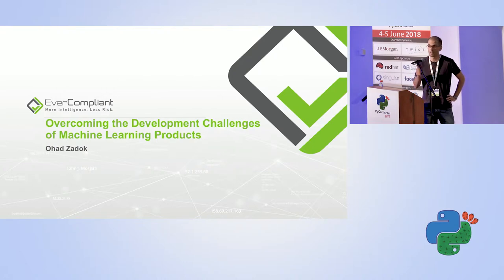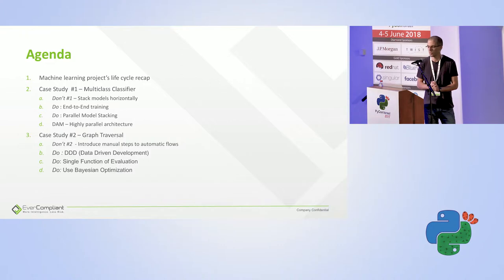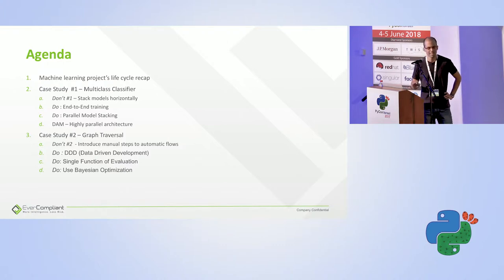If I had heard this lecture about four years ago, it would probably have saved me about two years. In this lecture we're going to talk about two case studies. One is a multi-class classifier — we'll talk about what the problem was and what stuff we encountered that we shouldn't do, and the proper way of doing it. The other problem is graph traversal. Before that, I'm going to do a very quick recap about what a machine learning project is, so we'll be on the same baseline.